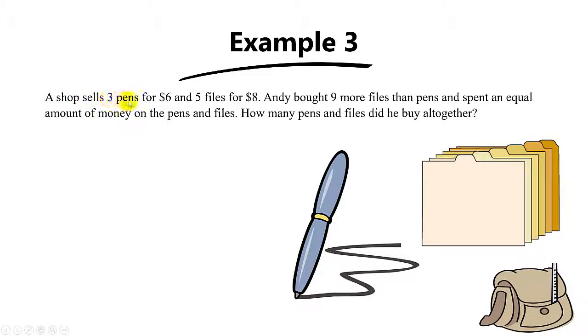A shop sells 3 pens for $6 and 5 files for $8. Andy bought 9 more files than pens and spent an equal amount of money on the pens and the files. How many pens and how many files did he buy all together?